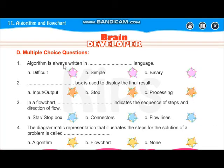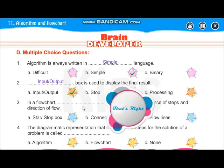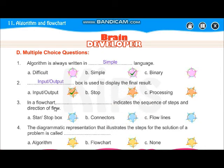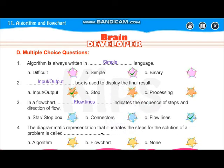Now we have to tick the correct answer and write down the option also. Algorithm is always written in simple language — so that it is easy to understand. The dash box is used to display the final result — that is your input or output box. In a flowchart, dash indicates the sequence of steps and the direction of flow. The diagrammatic representation that illustrates the steps for solving a problem is called a flowchart. Diagrammatic representation means your pictorial representation.